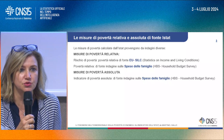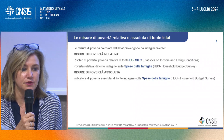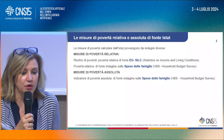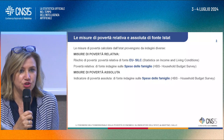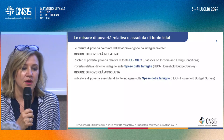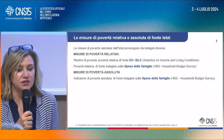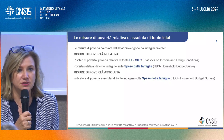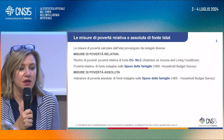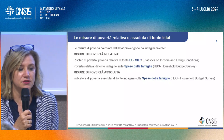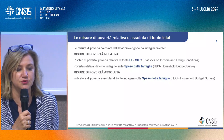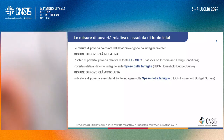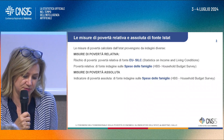Iniziamo col distinguere due indicatori fondamentali: le misure di povertà relativa e le misure di povertà assoluta, che hanno concetti sottostanti fondamentalmente diversi. Per le misure di povertà relativa calcoliamo il rischio di povertà, di fonte EUSILC, e un altro indicatore di povertà relativa di fonte indagine sulle spese delle famiglie. Per la misura di povertà assoluta calcoliamo un indicatore sempre di fonte indagine sulle spese delle famiglie.